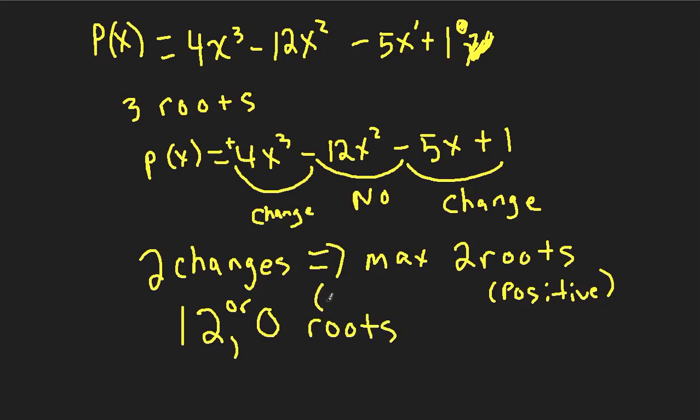So two or zero positive roots. These are our options. So now that we did the positive, we need to take into account the negative. So in order to do the negative, it's the same thing as the positive, but we change our polynomial to P(-x).